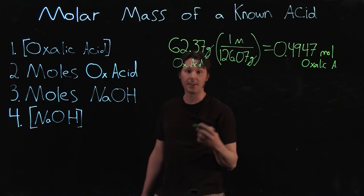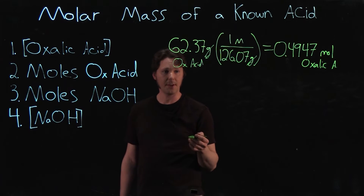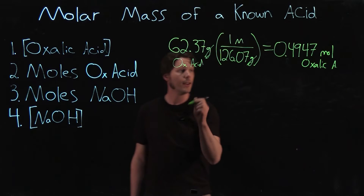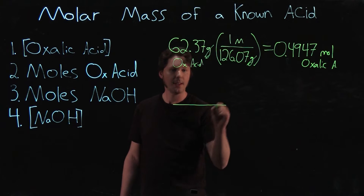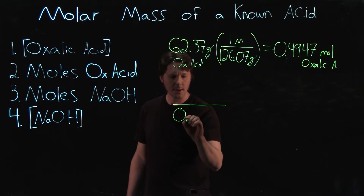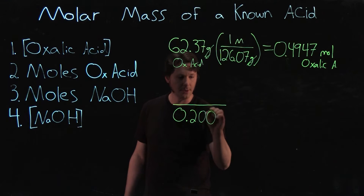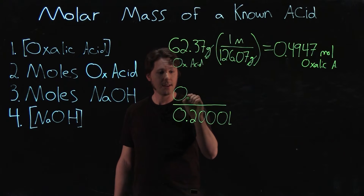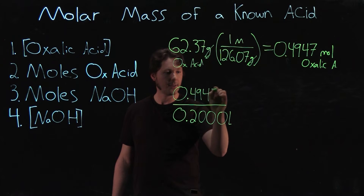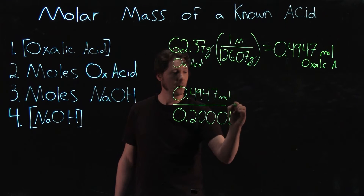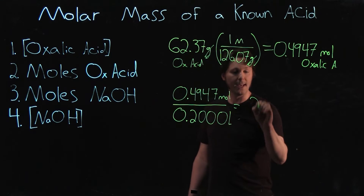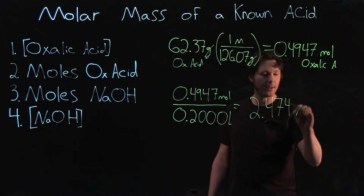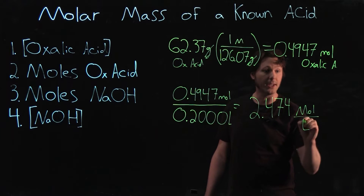To calculate the solution's concentration, you take this number of moles and divide it by your solution's volume. If you used a 200 mL volumetric flask, that's where we get our volume — 200 mL converts to 0.2000 liters. Taking the 0.4947 moles of oxalic acid divided by 0.2000 liters gives us 2.474 moles per liter for the oxalic acid solution.